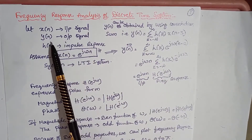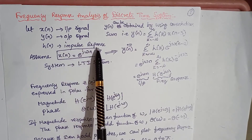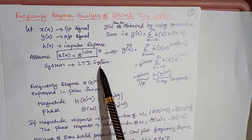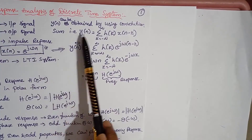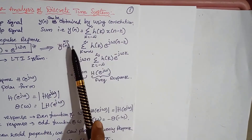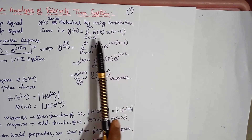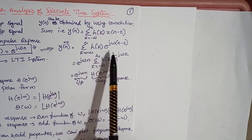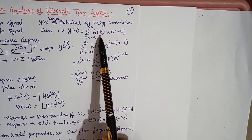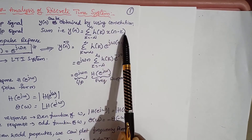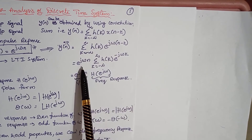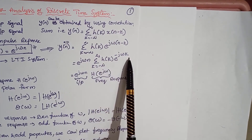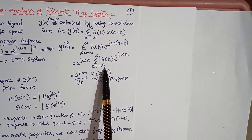Let X of n be the input signal, Y of n be the output signal, and H of n be the impulse response. Let us take X of n equal to e power j omega n as the input signal for the LTI system, so that Y of n can be obtained by using the convolution sum: Y of n equal to summation of H of k times X of n minus k, where k varies from minus infinity to infinity. Substituting X of n as e power j omega n, we get e power j omega n times summation of H of k times e power minus j omega k, where k varies from minus infinity to infinity.